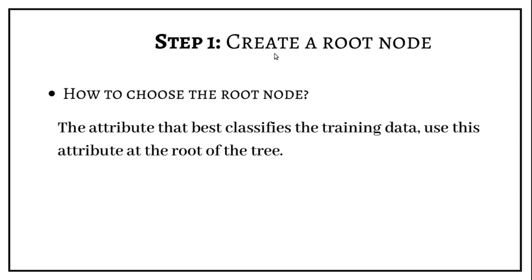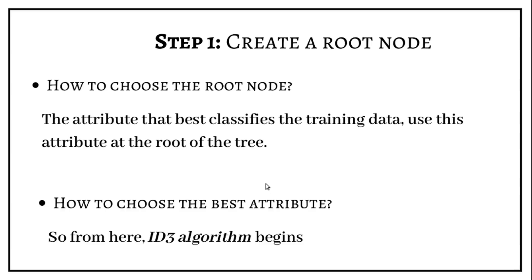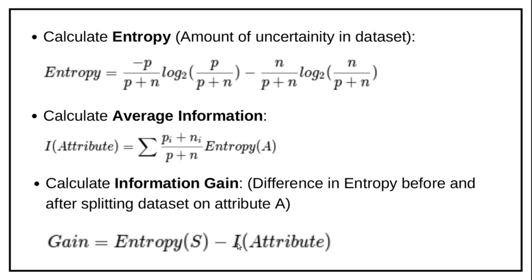To make a decision tree, we first have to choose the root node. How do we choose the root node? The attribute that can best classify the training data is used as the root node attribute. But how do we choose the best attribute? From here we will use the ID3 algorithm. ID3 algorithm has two important concepts: entropy function and information gain.